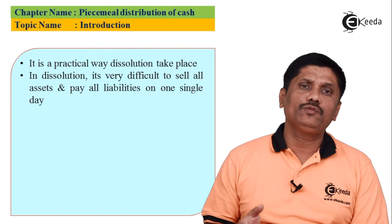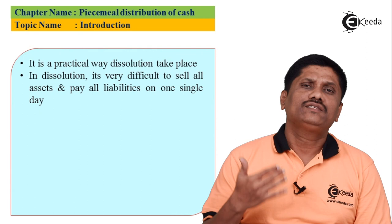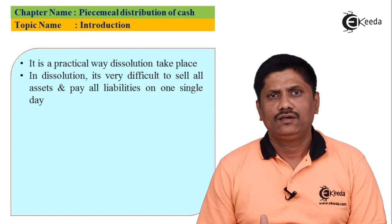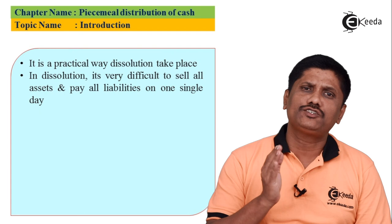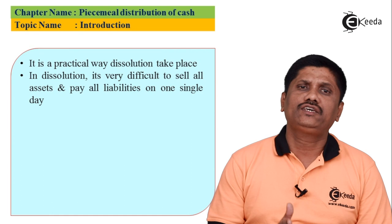So both possibilities exist for secured creditors: if liability exceeds asset realization, the shortfall ranks as unsecured creditors; if asset realization exceeds liability, the excess is added to available cash. This is how we tackle secured creditors.